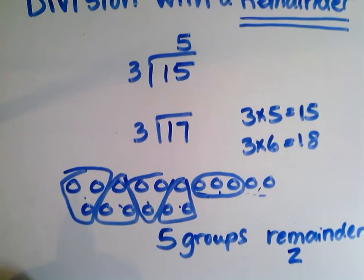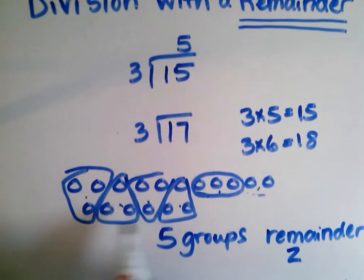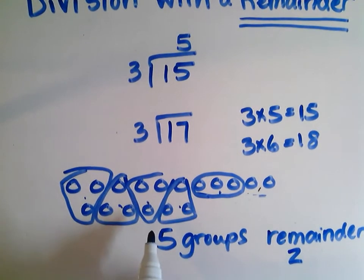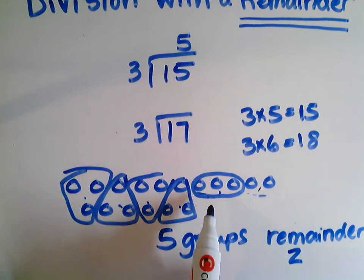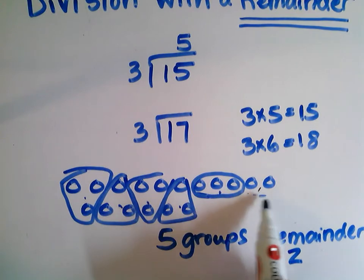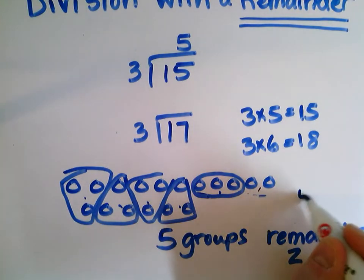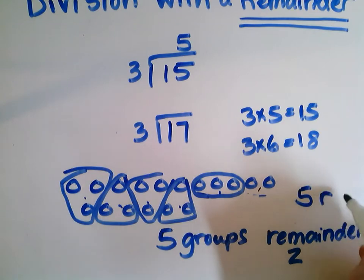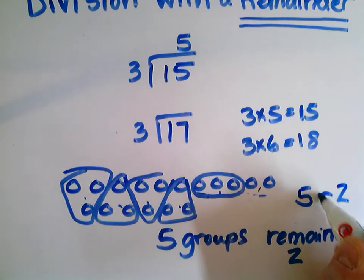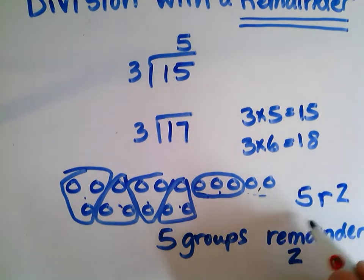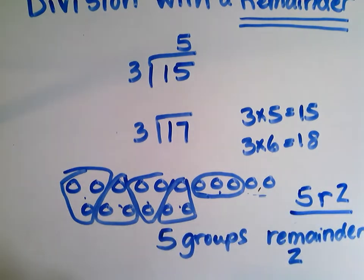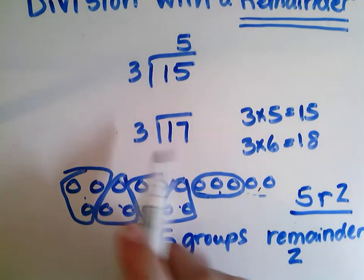So how I would solve that: I have 5 groups that I made of my 17 — that's 15 circles altogether — and 2 circles are left over. That's my remainder. And I can write my quotient as 5 remainder 2. I can just put this 'r' to stand for the word remainder: 5 r 2.